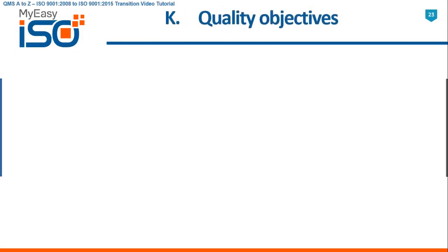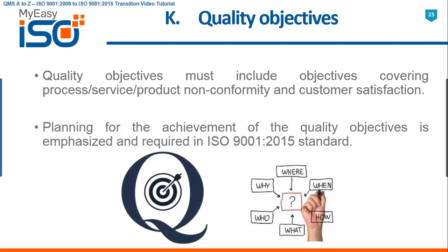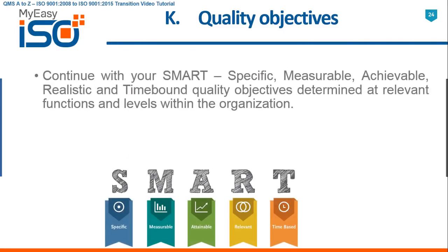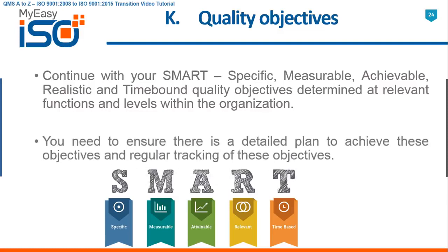K — Quality Objectives. Quality objectives must include objectives covering process, service, product nonconformity, and customer satisfaction. Planning for the achievement of the quality objectives is emphasized and required in ISO 9001 2015 standard. Continue with your SMART — specific, measurable, achievable, realistic, and time-bound — quality objectives determined at relevant functions and levels within the organization. You need to ensure there is a detailed plan to achieve these objectives and regular tracking of these objectives.